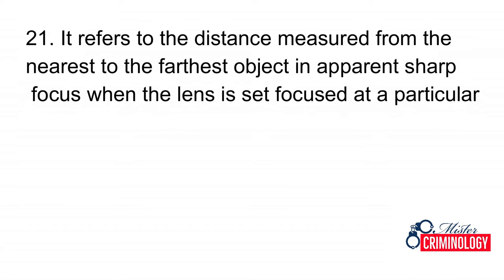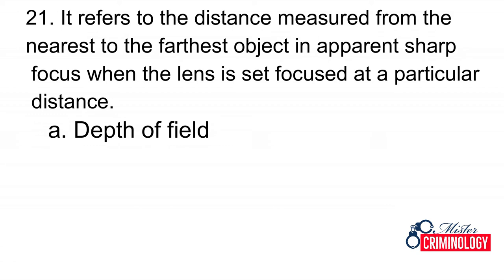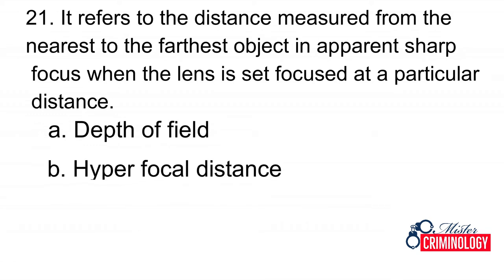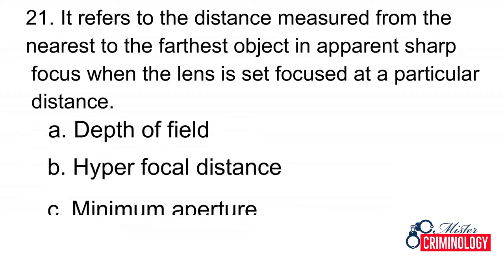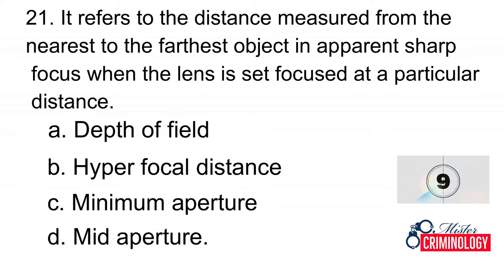Question 21: It refers to the distance measured from the nearest to the farthest object in apparent sharp focus when the lens is set focused at a particular distance. A. Depth of field, B. Hyperfocal distance, C. Minimum aperture, D. Mid aperture. Answer: A. Depth of field.